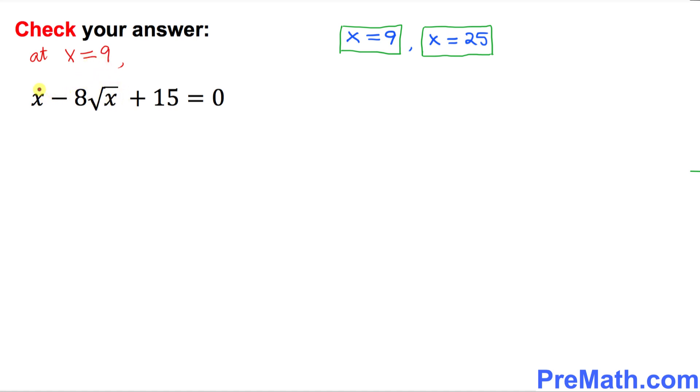So wherever you see x, you replace that one by 9. So that is simply going to give us 9 minus 8 times square root of 9 plus 15. My question is, is it equal to the right hand side, which is 0? Let's simplify the left hand side, 9 minus, this square root of 9 is 3. So 8 times 3 plus 15.